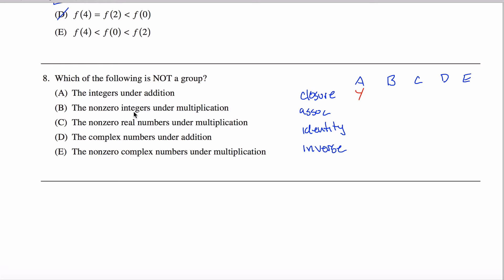The non-zero integers under multiplication: if you multiply together two integers, are you guaranteed to get an integer? Yes. And if you limit yourself to the non-zero ones, you're guaranteed to get a non-zero one. Yes for closure.